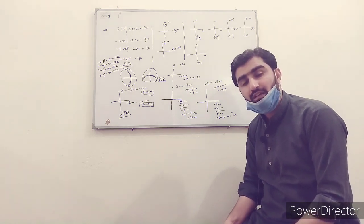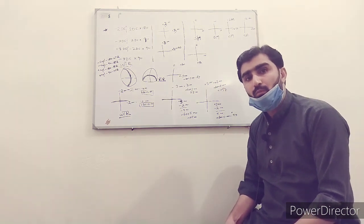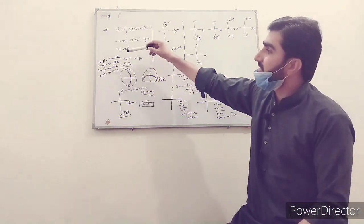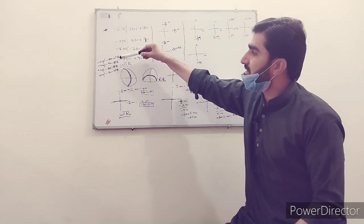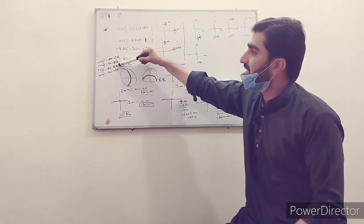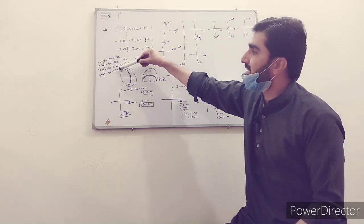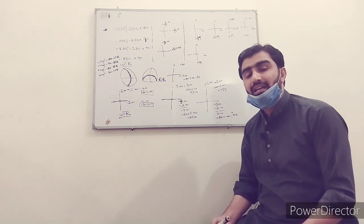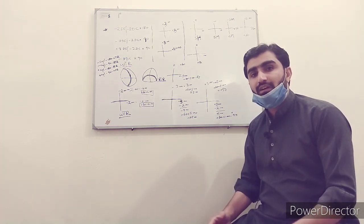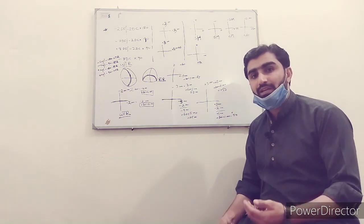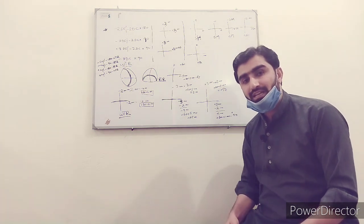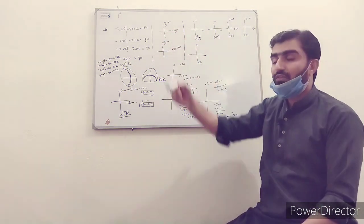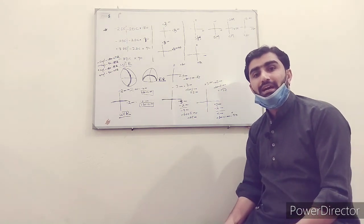Now the most important part: with-the-rule astigmatism and against-the-rule astigmatism. Many students follow a rote system — four points: minus cylinder at 180° is with-the-rule, minus cylinder at 90° is against-the-rule, plus cylinder at 180° is against-the-rule, plus cylinder at 90° is with-the-rule. But you cannot remember these points every time — you may forget after half an hour. I am going to explain this properly according to prescriptions.